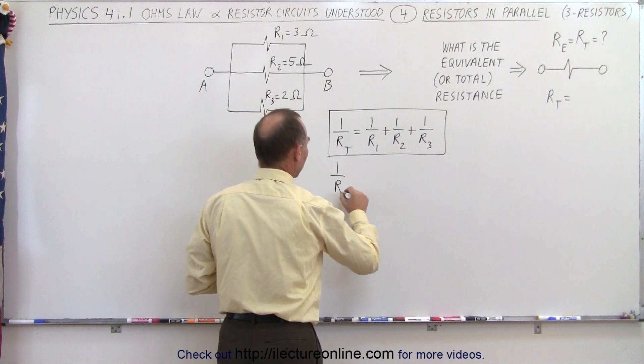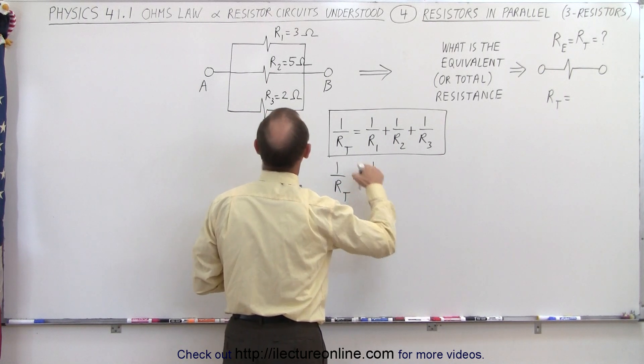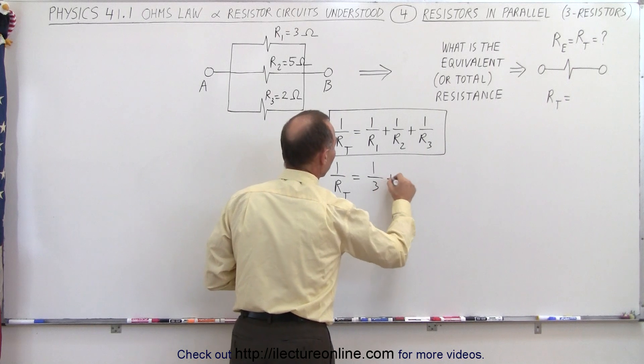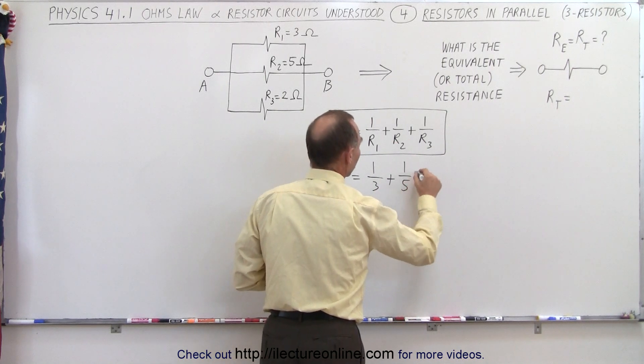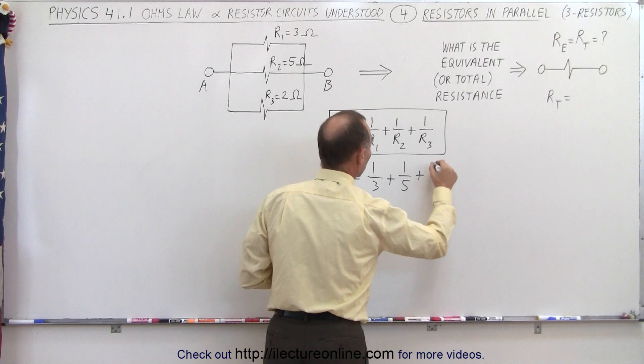So, one over the total resistance is therefore going to be equal to one over R1, which is three ohms, plus one over R2, which is five ohms, plus one over R3, which is two ohms.